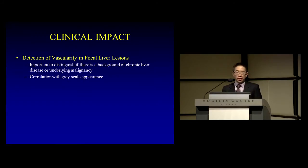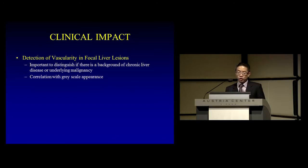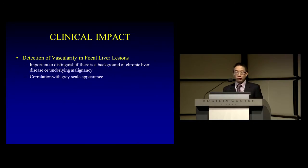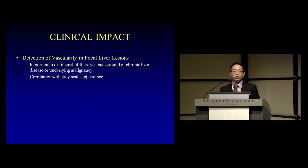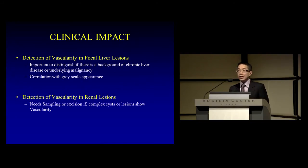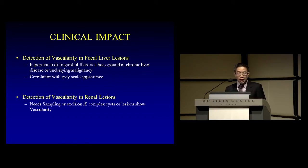What is the clinical impact within the abdomen? We can now detect low flow within focal liver lesions. When you see a hypervascular or vascular lesion, it's important to distinguish whether there's a background of chronic liver disease or underlying malignancy, and to correlate with grayscale appearance. However, it is the hallmarks of contrast enhancement — the wash-in and wash-out — that we rely on to characterize focal liver lesions. SMI is probably slightly more useful for solid renal lesions, where the key question is simply whether the lesion is vascular, as any vascular renal lesion will likely need intervention.